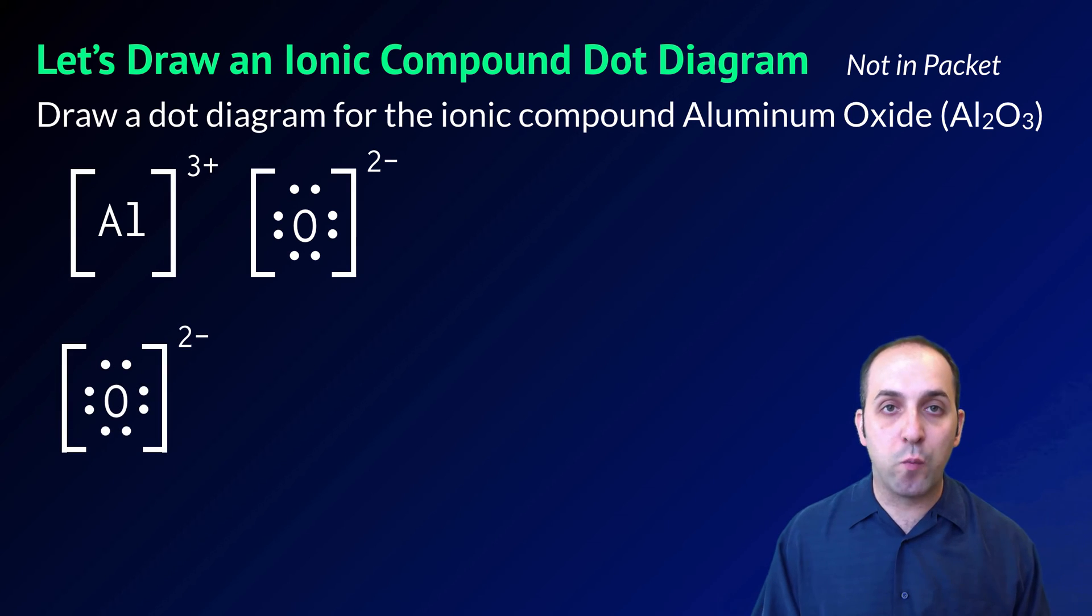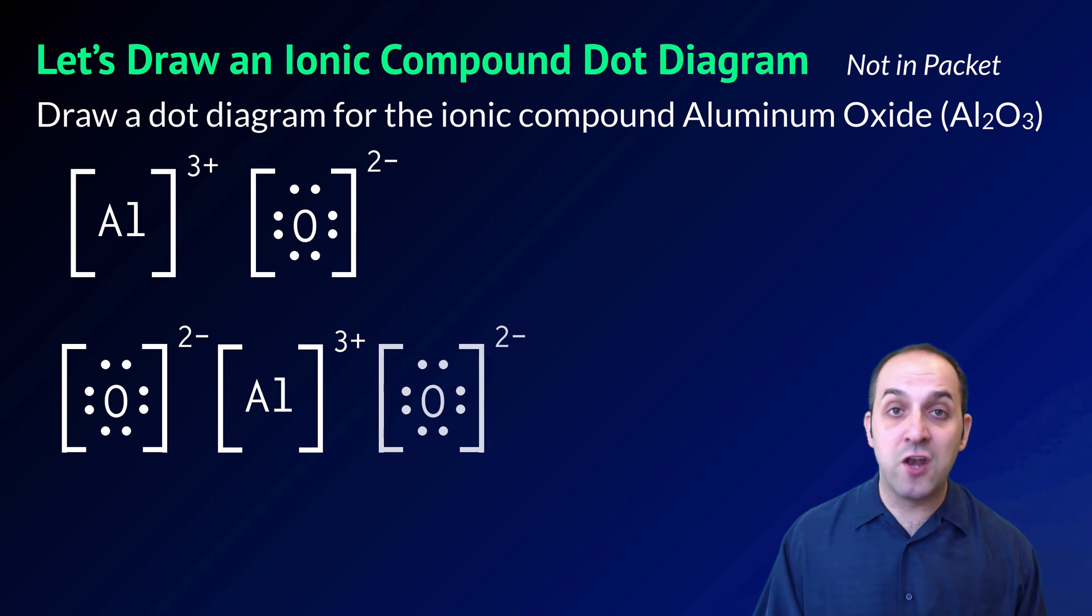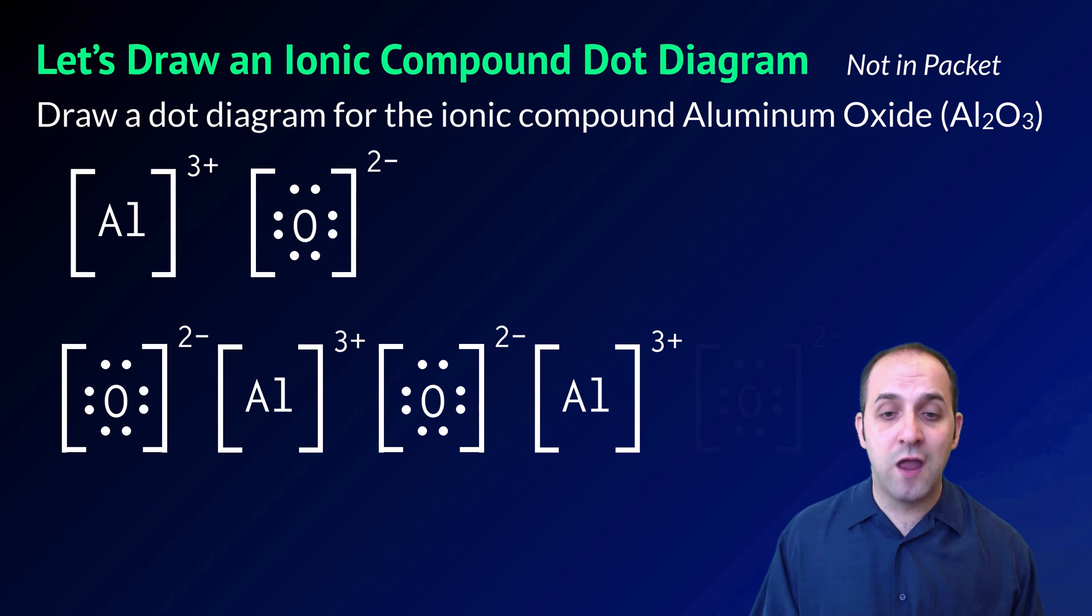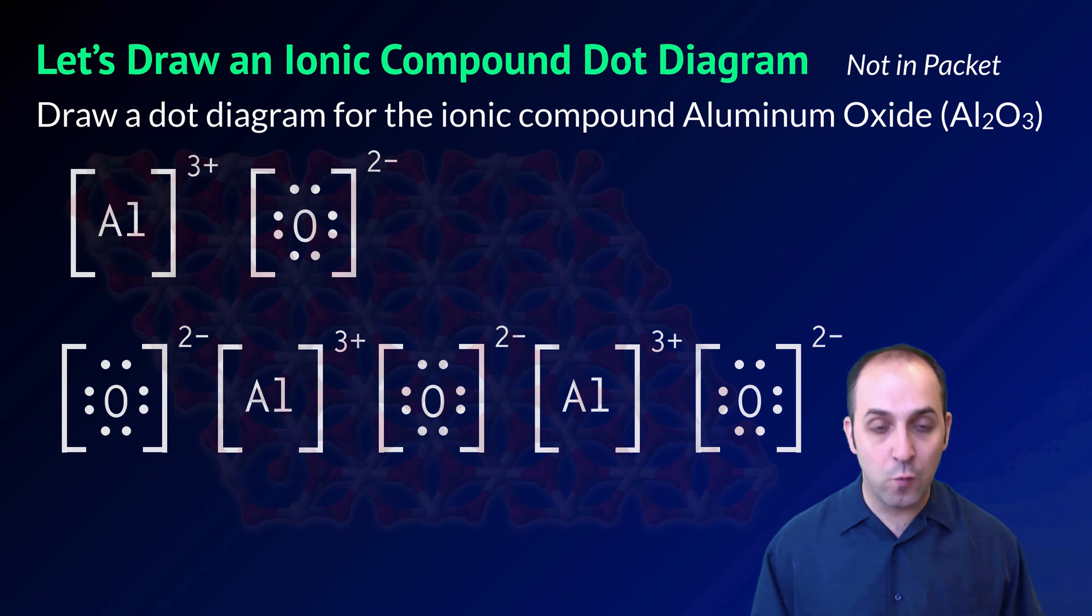In order to do that, I'm going to start with one oxide ion, and then one aluminum ion, and then another oxide ion, and then another aluminum ion, and then finally a third oxide ion. If I add up all of these charges, I have plus six and minus six, which gets me to zero. This is the acceptable compound dot diagram for aluminum oxide.